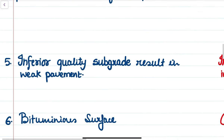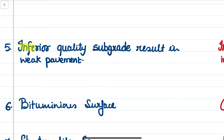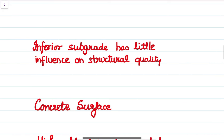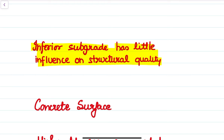The fifth difference is that inferior quality subgrade may result in a weak flexible pavement. Since flexible pavements lack flexure strength and are built in layers, any deformation in the subgrade — which acts as the foundation for all other layers — results in an overall weak flexible pavement. This is not the case with rigid pavement; since rigid pavement is made of cement concrete and has significant flexure strength, inferior subgrade quality has very little to no influence on the overall pavement structure quality.